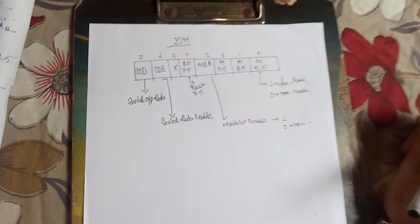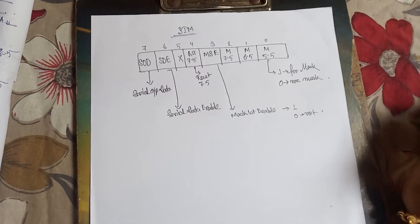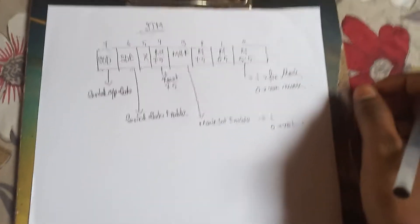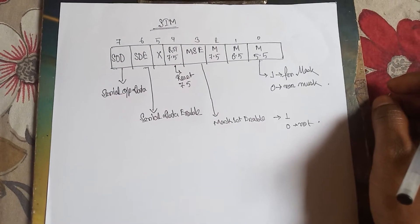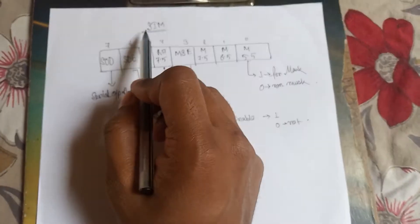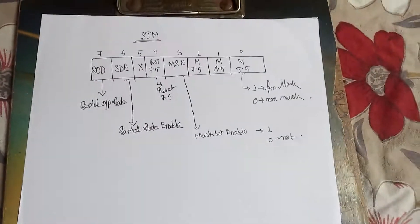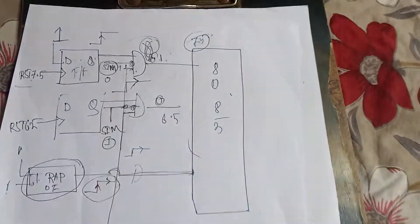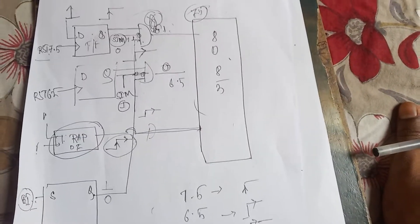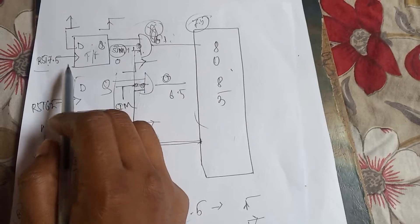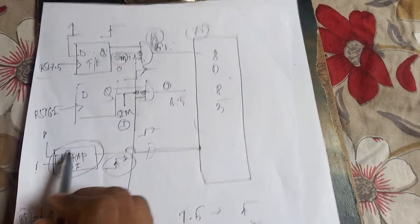So today we learn about the RIM and SIM instruction. How SIM instruction will work and how RIM instruction will work. What is the meaning of SIM instruction? SIM instruction means Set Interrupt Mask. You already know this picture. We already learned about this picture, that is suppose there is an interrupt RST 7.5 and interrupt RST 6.5.